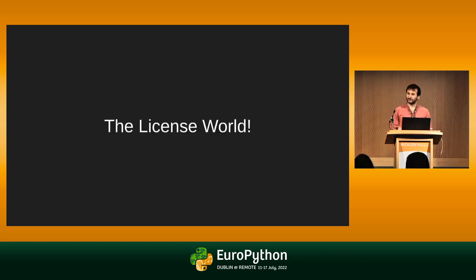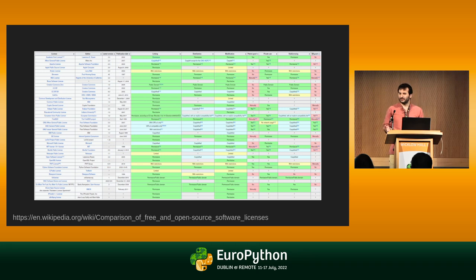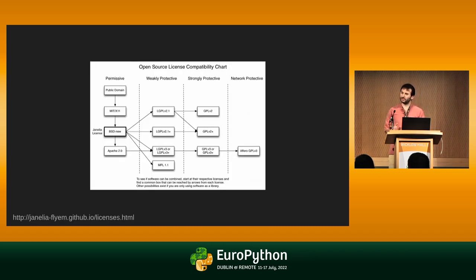The license world is kind of crazy. If you look at the Wikipedia page, there's a ton of them and each column is a different feature. They allow different things, they ban different things. Maybe you should focus on licenses that everybody agrees are good licenses — but each column here is a different organization and they don't necessarily agree with one another. At least there are a few that people generally agree are good licenses.